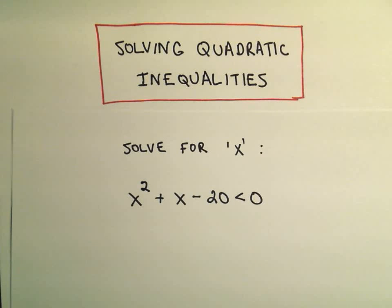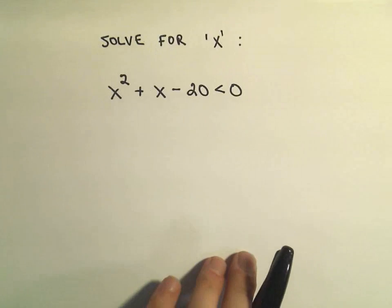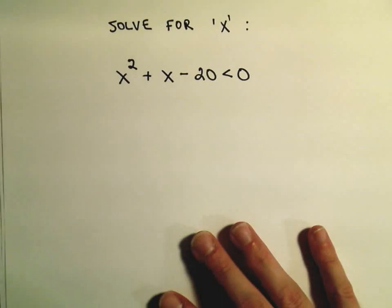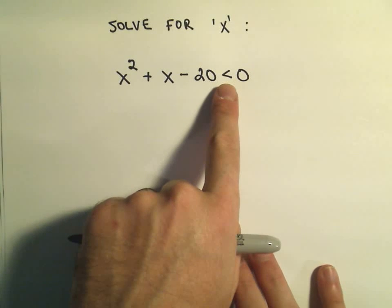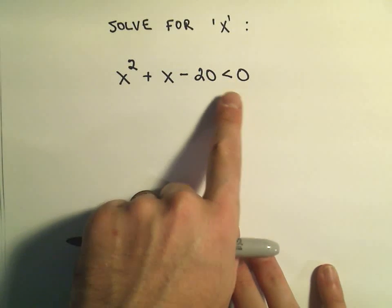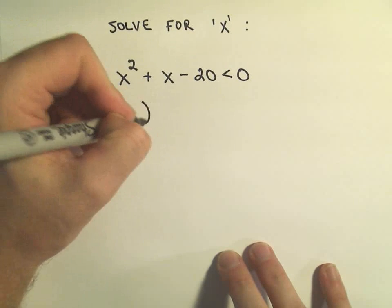All right, in this video I'm going to do an example of solving a quadratic inequality. And to solve quadratic inequalities, basically the way I do it is I almost pretend that the inequality is an equal sign. And then, so if this was an equation, what I would try to do is simply try to factor this quadratic.